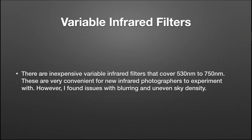I also found it fun for a while — there are variable infrared filters on Amazon for about $25–$35 that go from 530 to 750 nanometers. When traveling I tried these a lot. Setting it around 580 or 590 would give me a full stop faster shutter speed, so I could shoot at 1/125th. Changing it to 720 I'd shoot at 1/60th. However, these variable filters are really not recommended because they can lead to blurring and uneven sky density, which ruined quite a few of my photos. So I went back to just regular 720 filters.